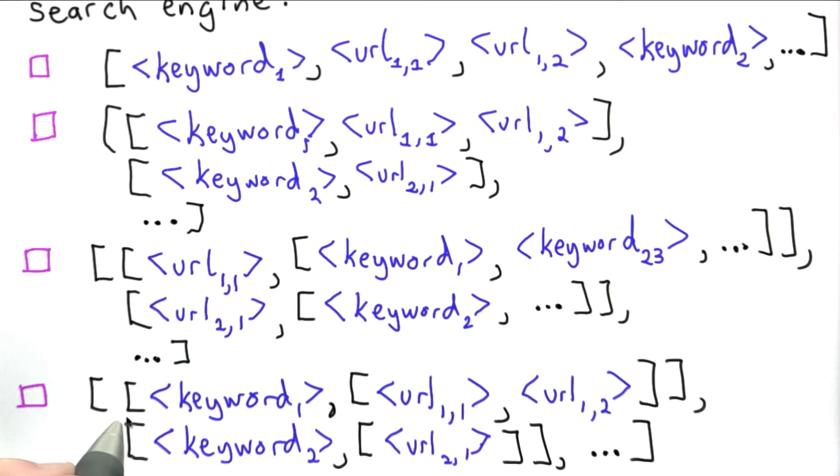The fourth choice is a list where each element is a list, and each element list is a keyword followed by a list of all the URLs that contain that keyword.